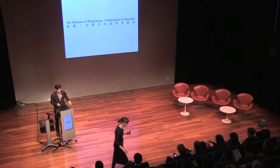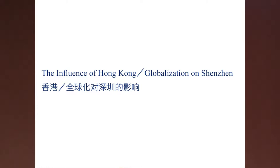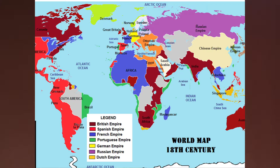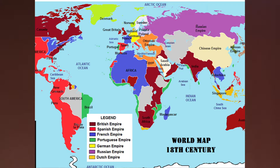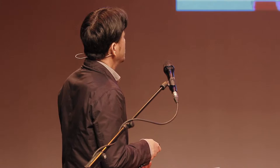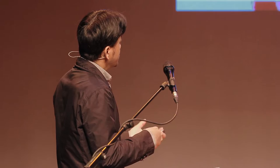If we talk about the story of Shenzhen, we need to trace back to the influence of globalization and the influence of Hong Kong. We need to begin from the 18th century because this is the historical context of Hong Kong and Shenzhen. This is also the first globalization, and at that time China had different influences from foreign powers. This is a very important geographic location — this is the Pearl River Delta in South China.